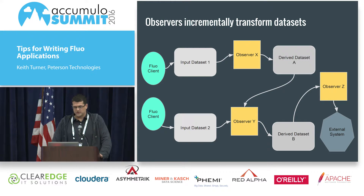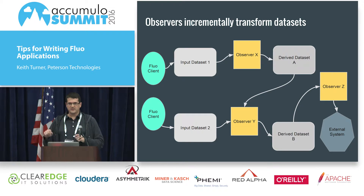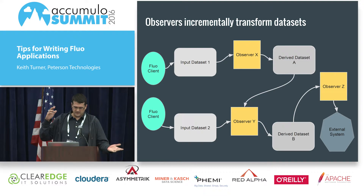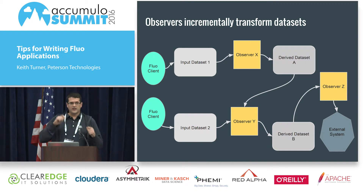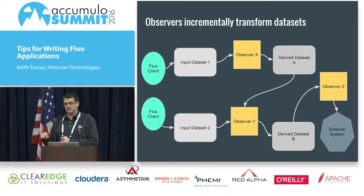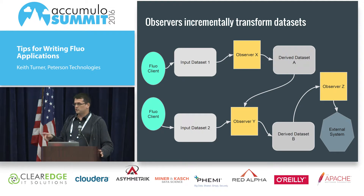Here's an example of an abstract Fluo application: Fluo clients feed data into two input datasets — say, web pages and Twitter data. Observers are triggered as clients add data, which runs other transactions creating derived datasets. Eventually that may trigger something that exports to an external system.